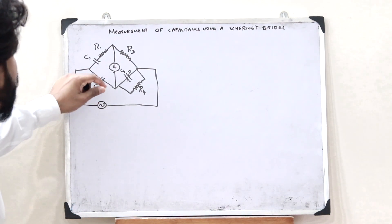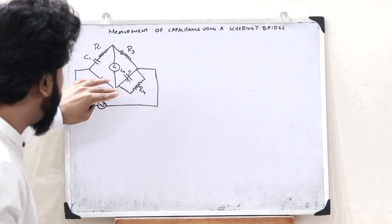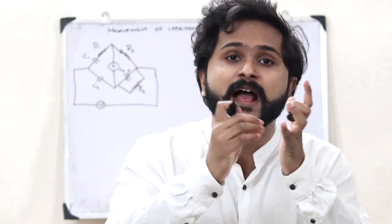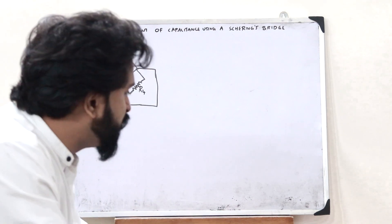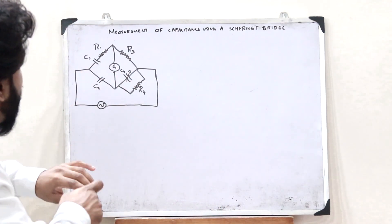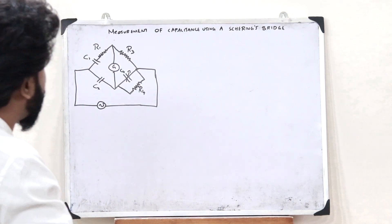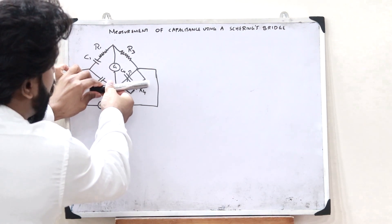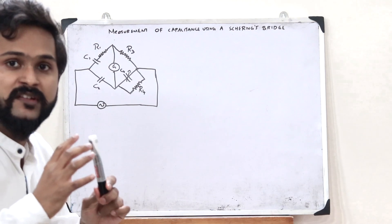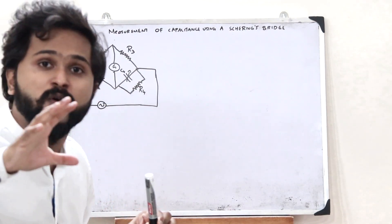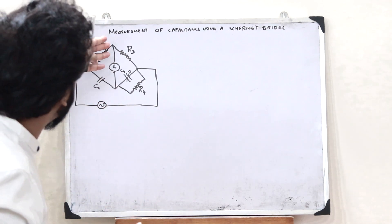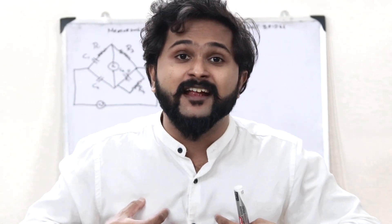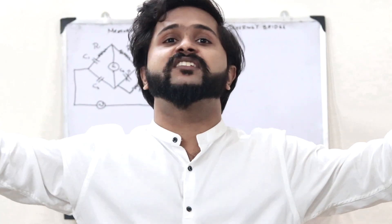Now, let us adjust this particular capacitor. This is a variable capacitor — that is, we can actually change the value of the capacitance. While we change the value of this particular capacitor, we can see some kind of deflection in this galvanometer. But at a particular value of this capacitor, what we observe is that this galvanometer shows no deflection, meaning no current is passing through it. In such a scenario, we say that we have achieved a balanced condition.